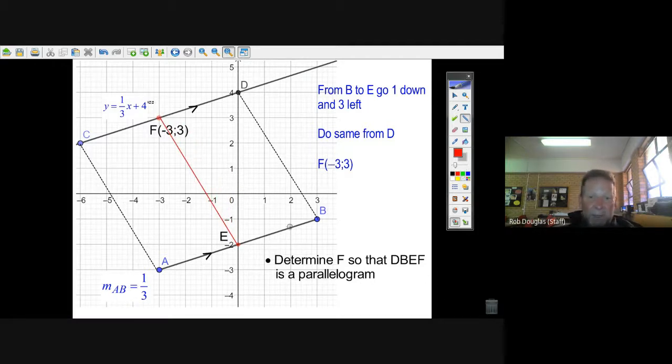Now you can see that this really is, I used a solid red line. It really is a parallelogram, D, B, E, F. And all I had to do was look at B and E, one down and three to the left, and just do the same thing up here, one down and three to the left. And I determined a point that will make D, B, E, F, a parallelogram.